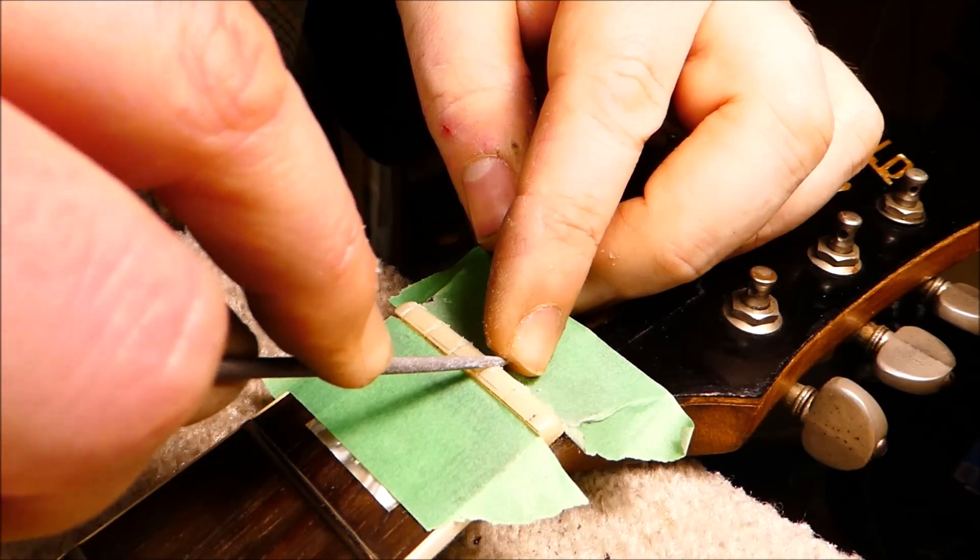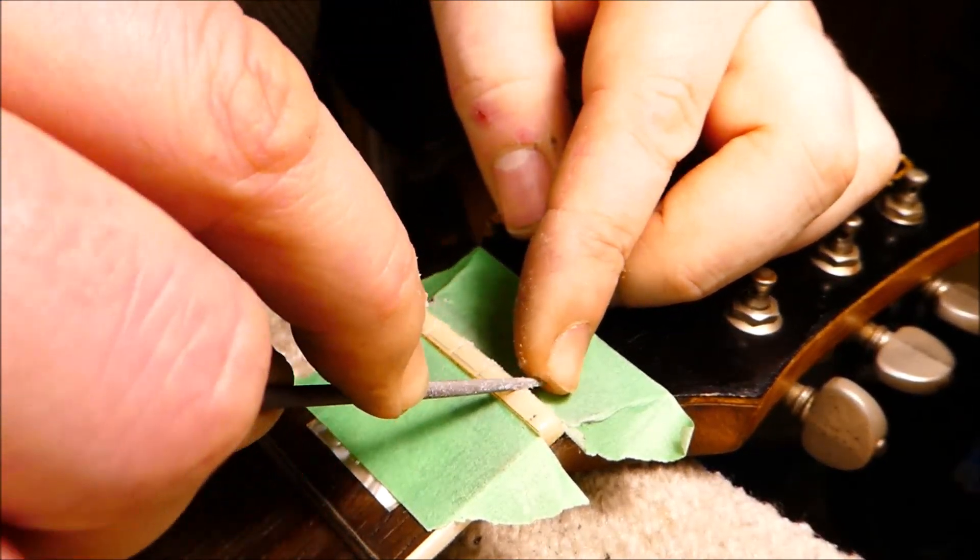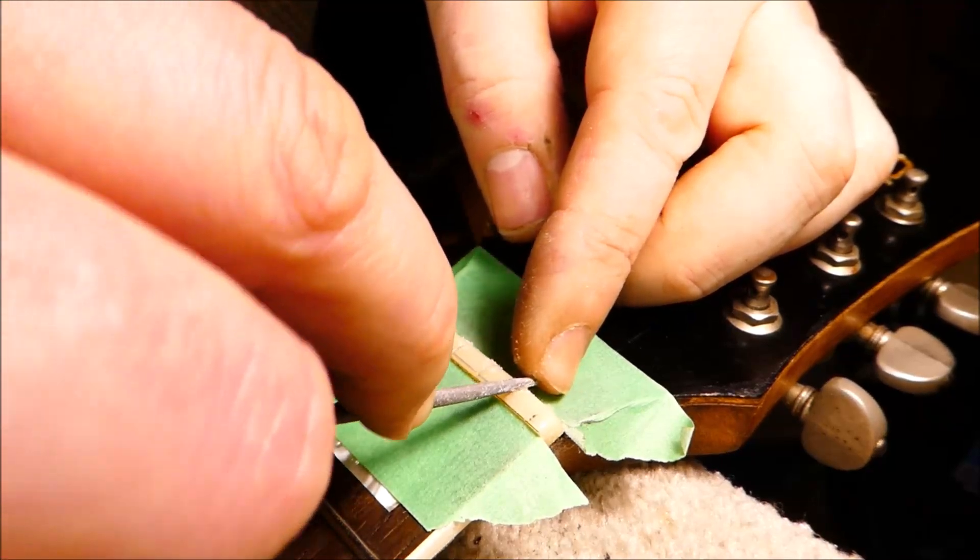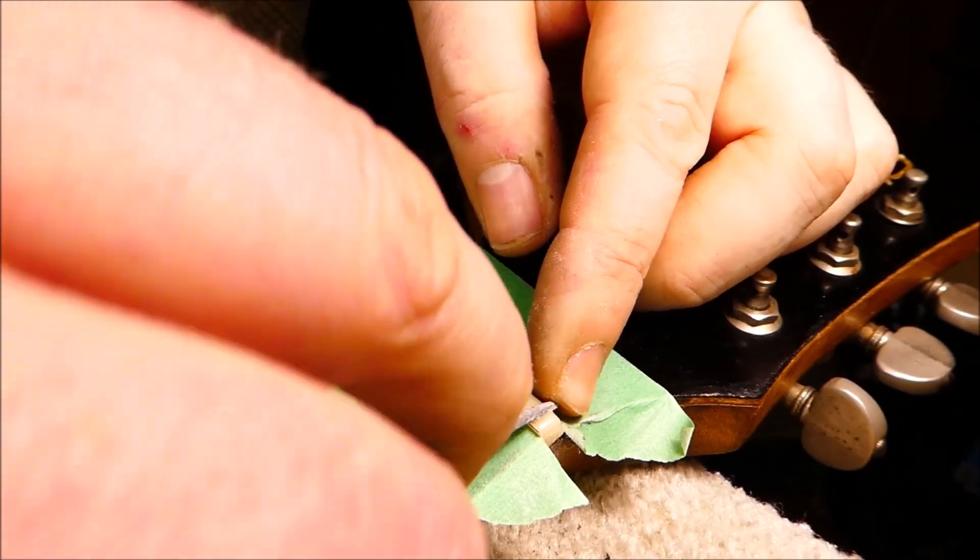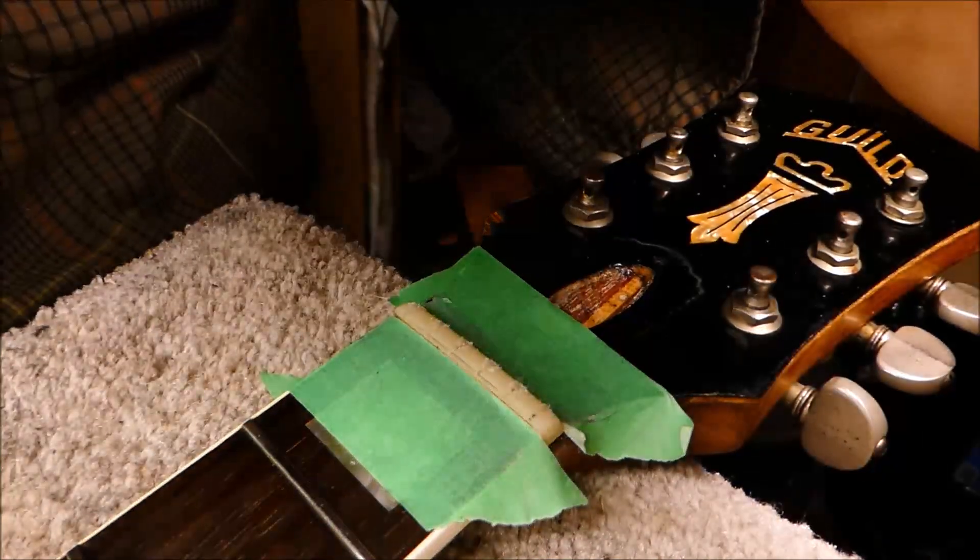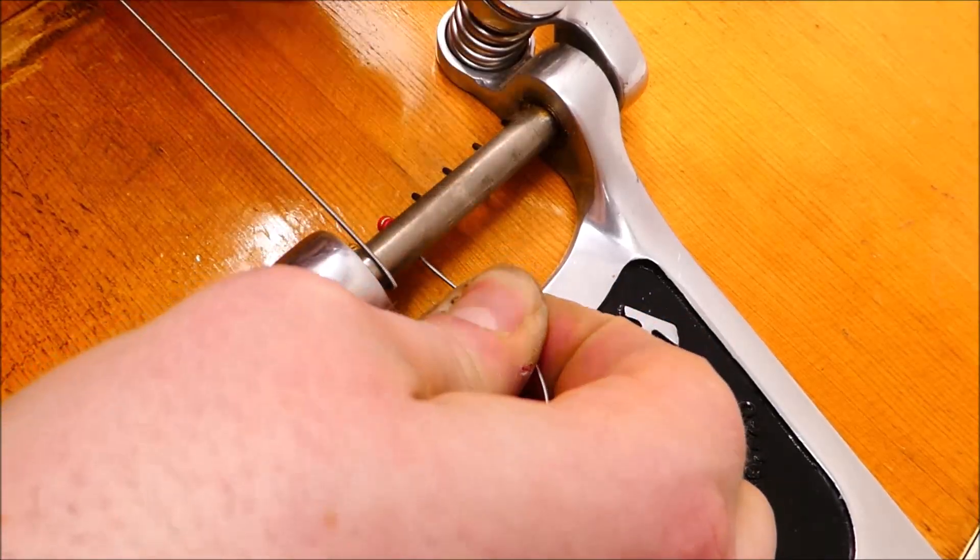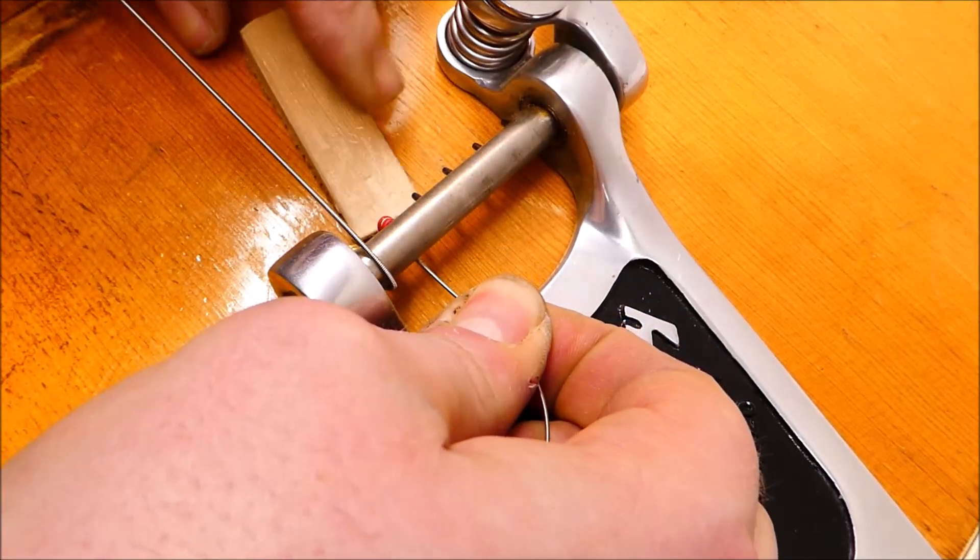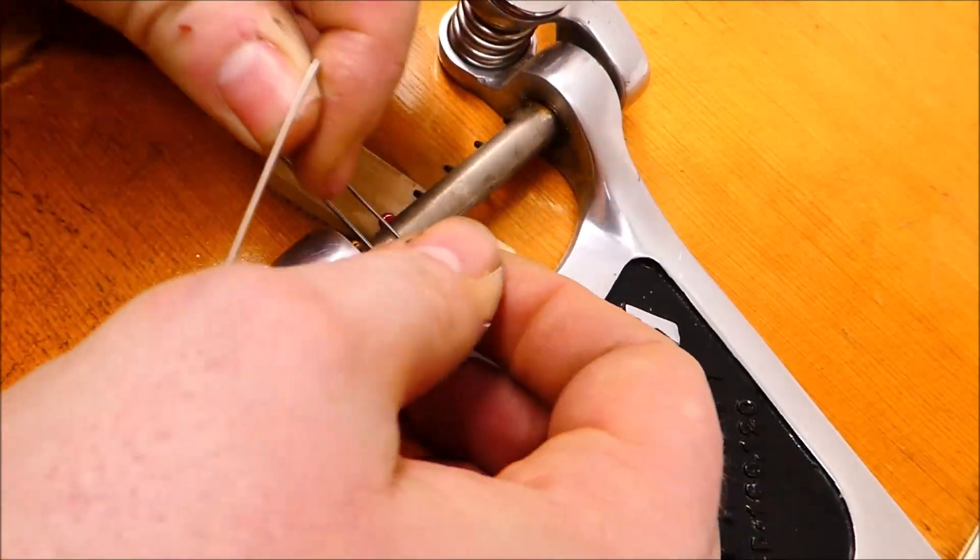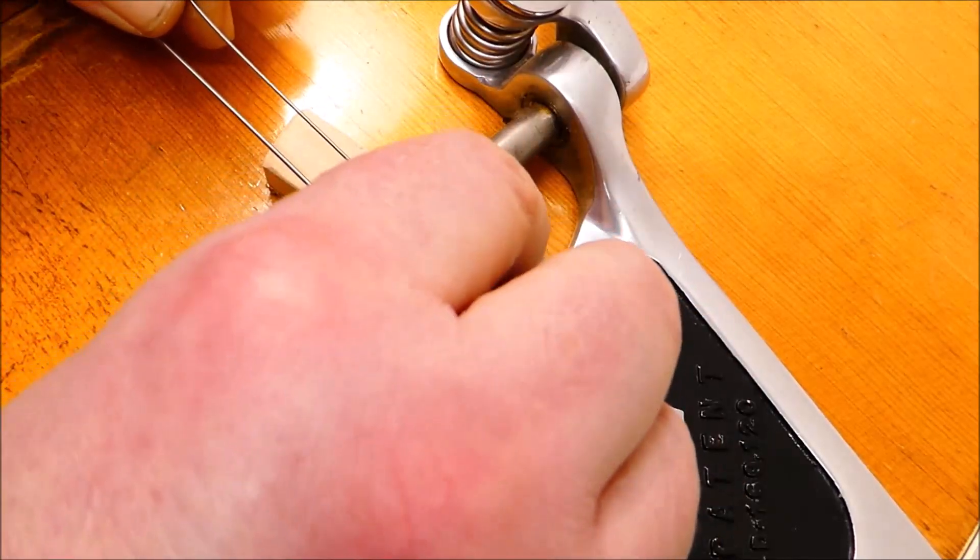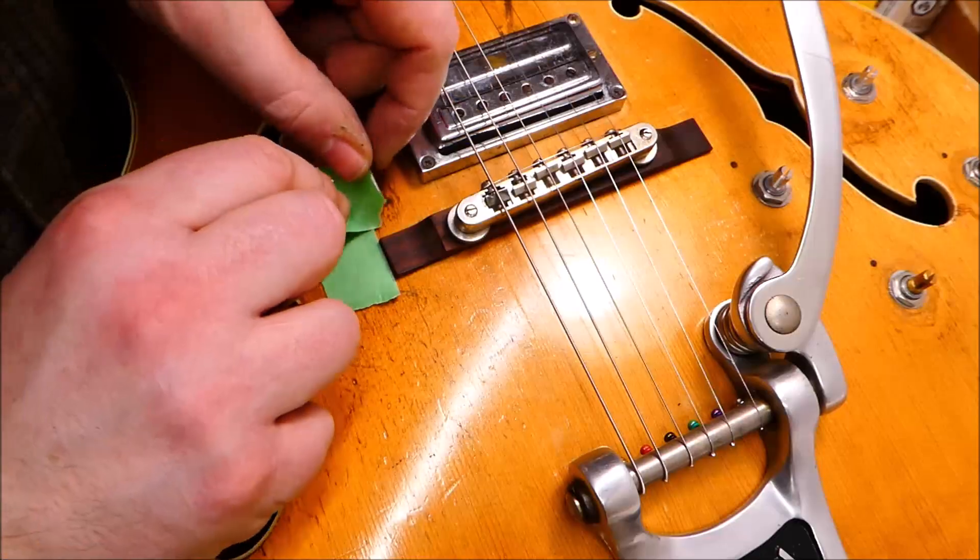Relieving the back edge of the nut. This helps when you're using a Bigsby. Nothing short of, say, a roller nut or roller bridge is really going to make a Bigsby run smoothly, but if you can get rid of any excess nut material that's in the way, it can kind of smooth things up and keep it from getting caught. Now I'll restring this beast. It's always a fun thing doing a Bigsby tailpiece. I use the little wedge there to hold things in place while I get it through the other end of the tuner.